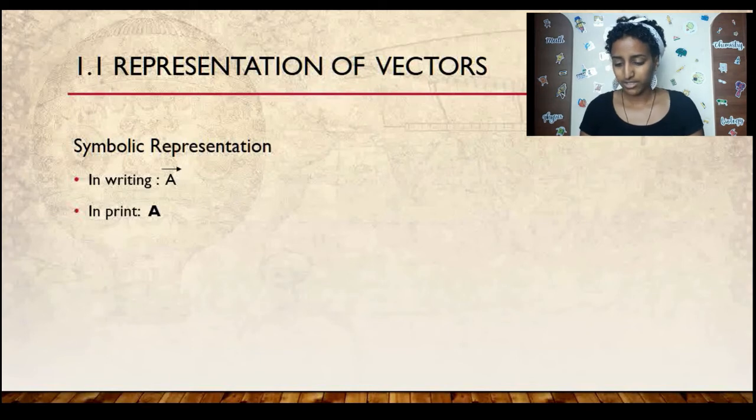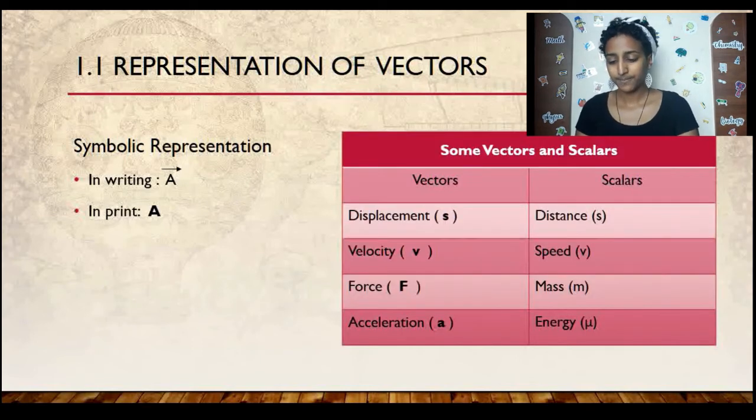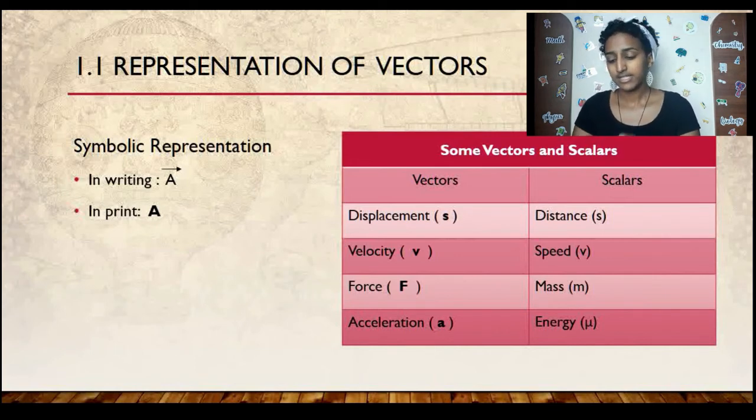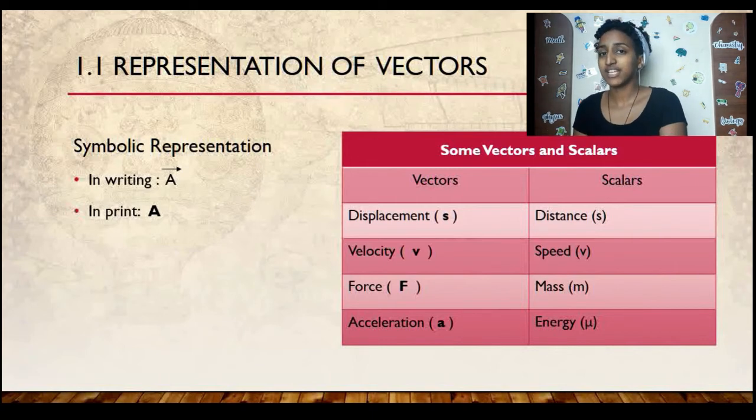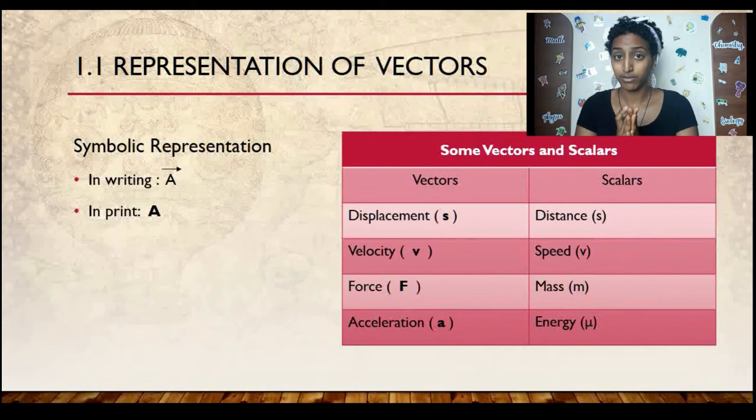To see the difference between scalar and vectors, let's observe this table we have here. We have a list of vectors, and we have a list of scalars. And you can see right off the bat that the vectors are all written in boldface, and the scalars are all not written in boldface. I want us to look at the first two examples of both the vectors and the scalars. We see that displacement and distance both have the same symbol s, just as velocity and speed both have the same symbol v. Now, despite the difference of one being bold and one not being bold, it's kind of tricky to figure out the difference between the two.